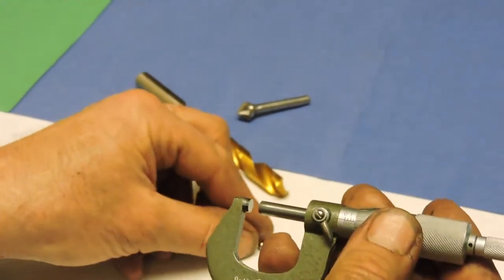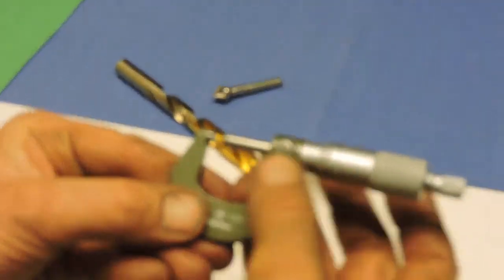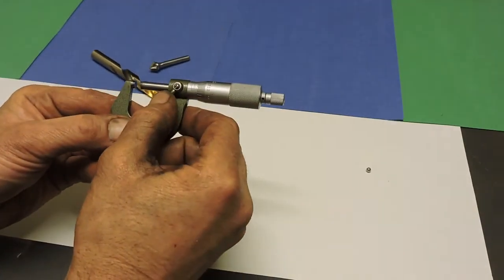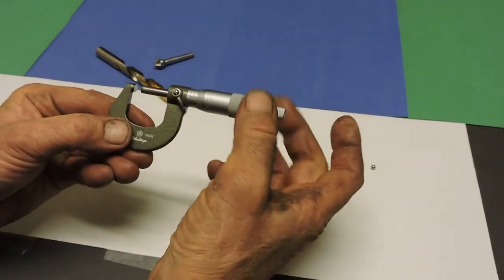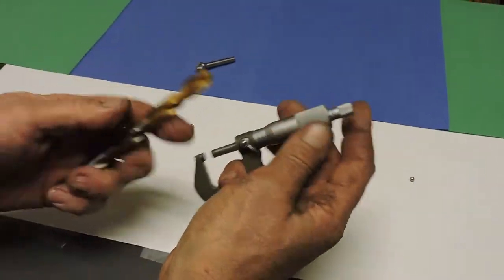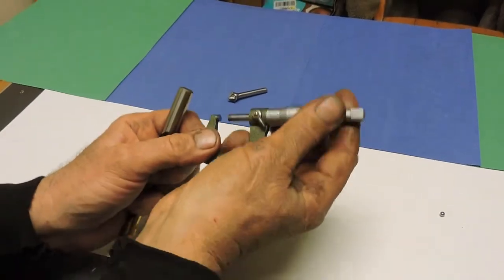Most micrometers have a lock on them, and that's what this is. That prevents the thimble from turning, so I always want to make sure that's unlocked. We'll measure something a little bigger that's easier to handle. We'll measure the shank of this drill.